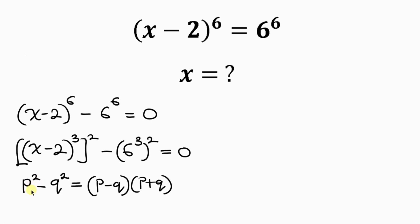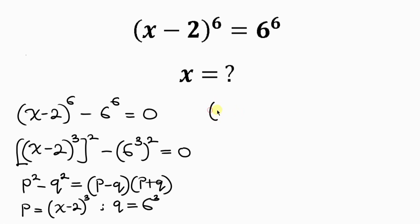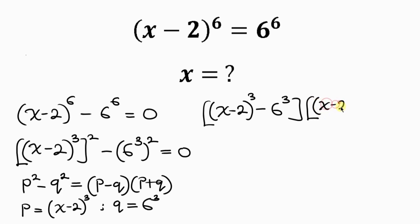By comparison, our p is equal to x minus 2 all raised to the 3, and our q is equal to 6 cubed. So we write the expression as x minus 2 cubed minus 6 cubed, times x minus 2 cubed plus 6 cubed, equal to 0.